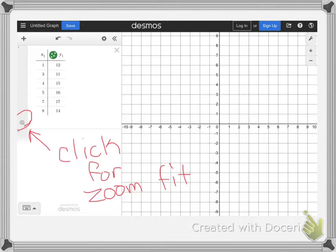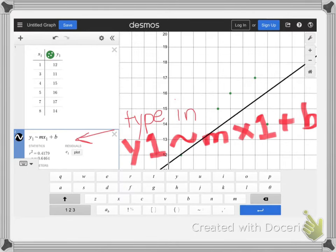Alright, so then after you type in all your values for X and Y, you see that magnifying glass on the bottom? You'll click that so it can do a zoom fit and show you your scatterplot.